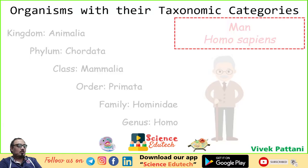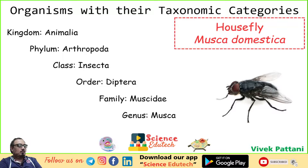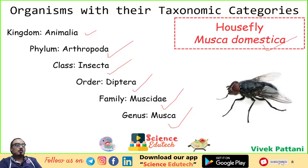Next one is the housefly, which we see around. Kingdom: Animalia. Phylum: Arthropoda. Class: Insecta. Order: Diptera. Family: Muscidae. Genus: Musca. Species: domestica. The scientific name will be Musca domestica.